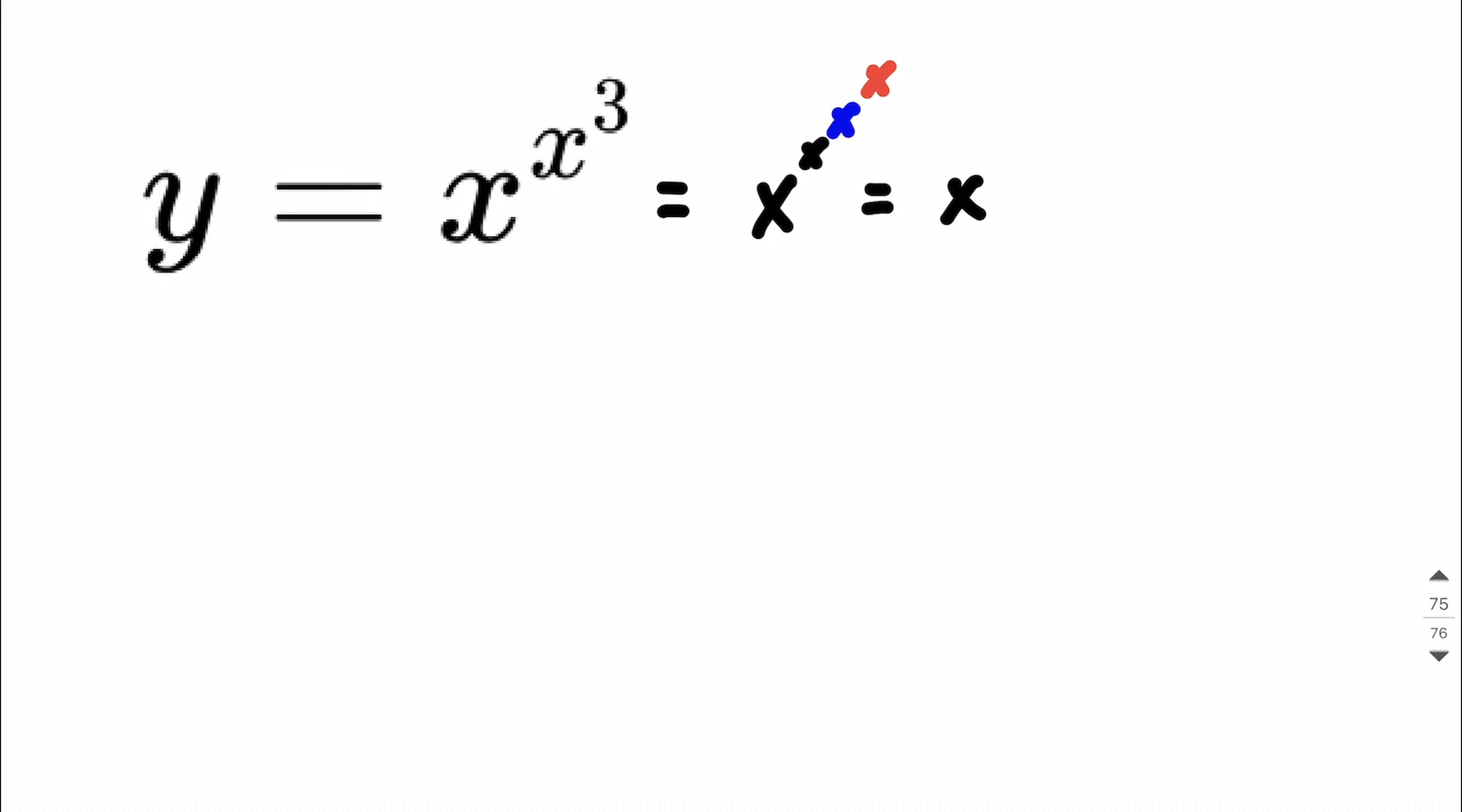If I start out with x to the x, and I work on combining the blue x and the red x together, how that's going to work is you would combine these using a multiplication for our exponents.